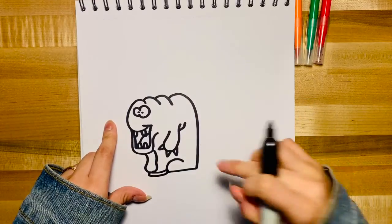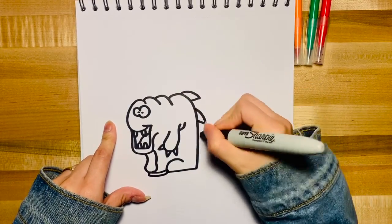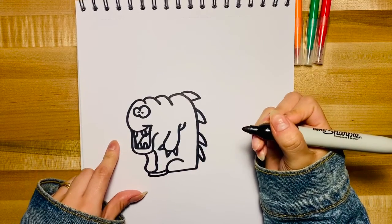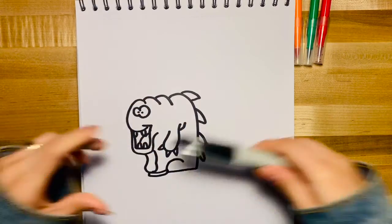Next we're going to draw some spikes coming down. All right, now we're going to color him in.